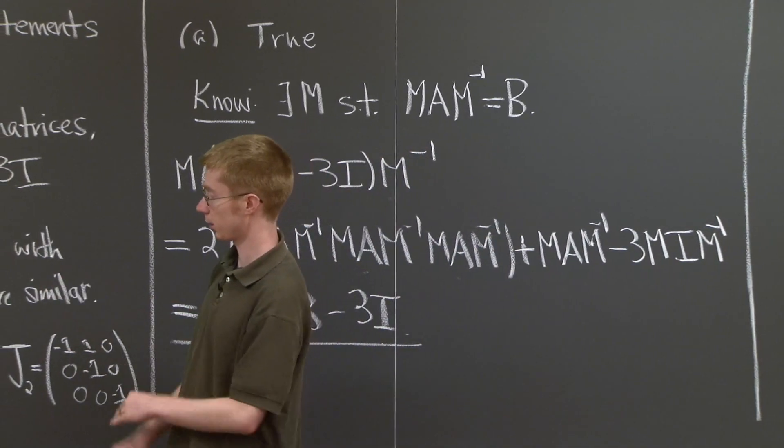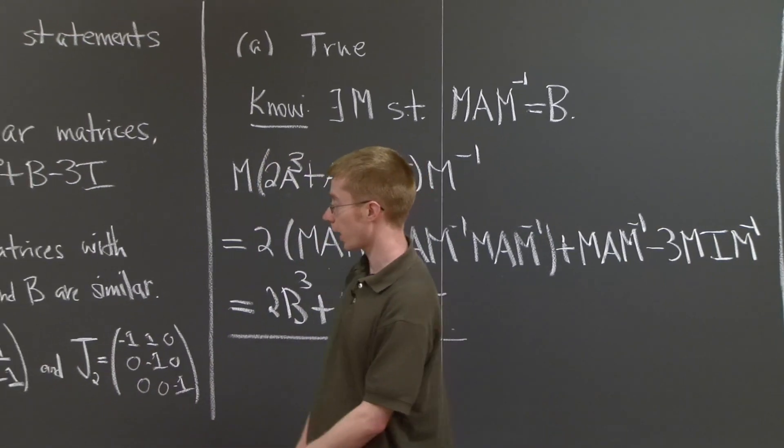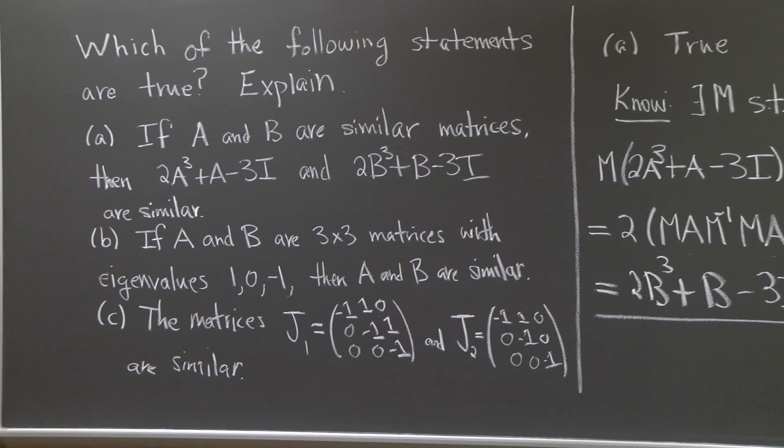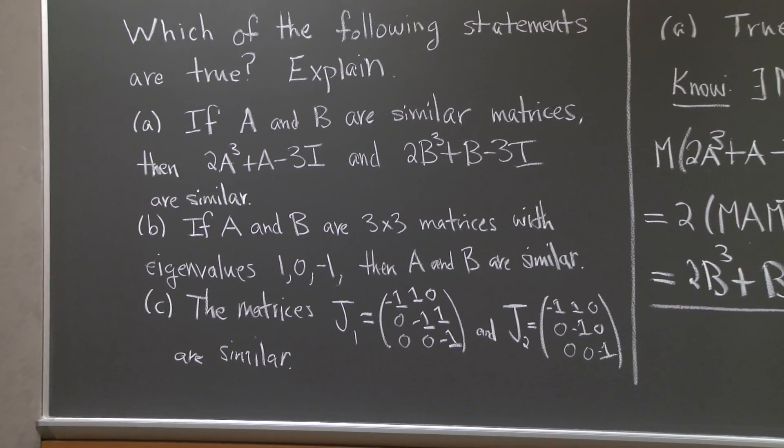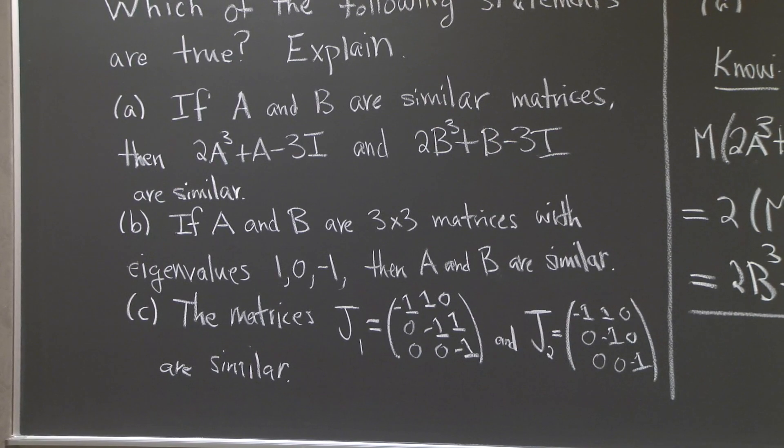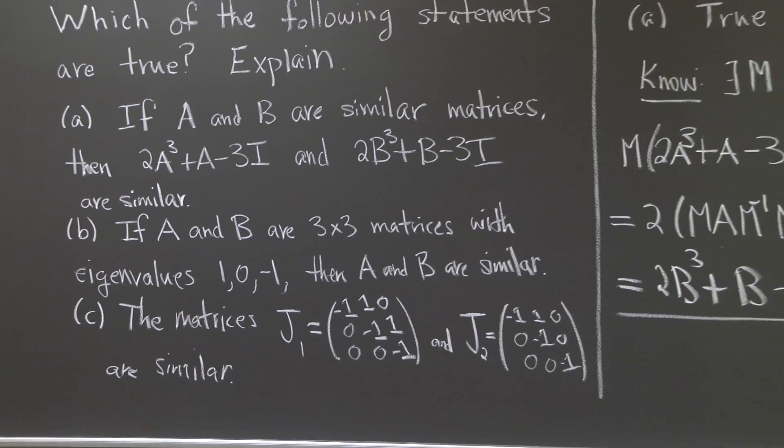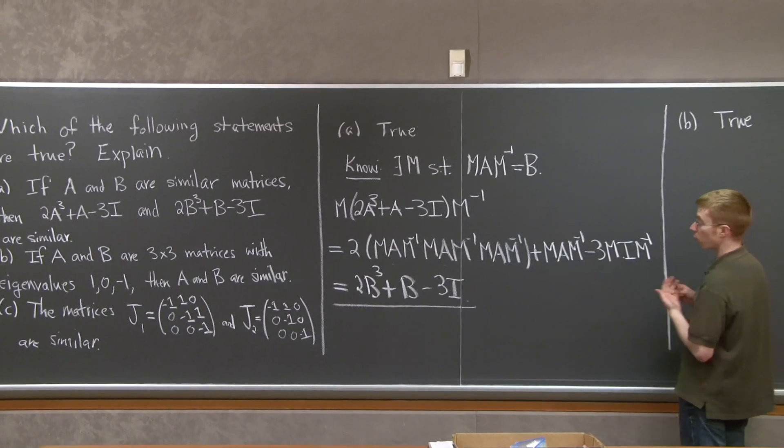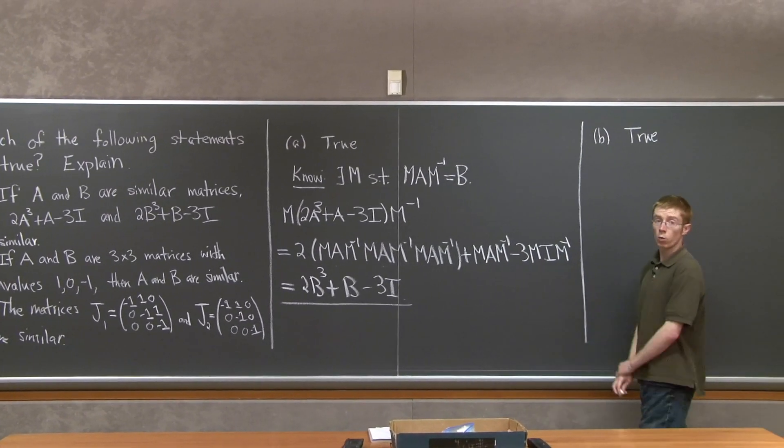Now let's go on to part B. So now A and B are 3 by 3 matrices with eigenvalues 1, 0, and -1. And their eigenvalues are distinct. So it turns out that B is true as well. And why is that?